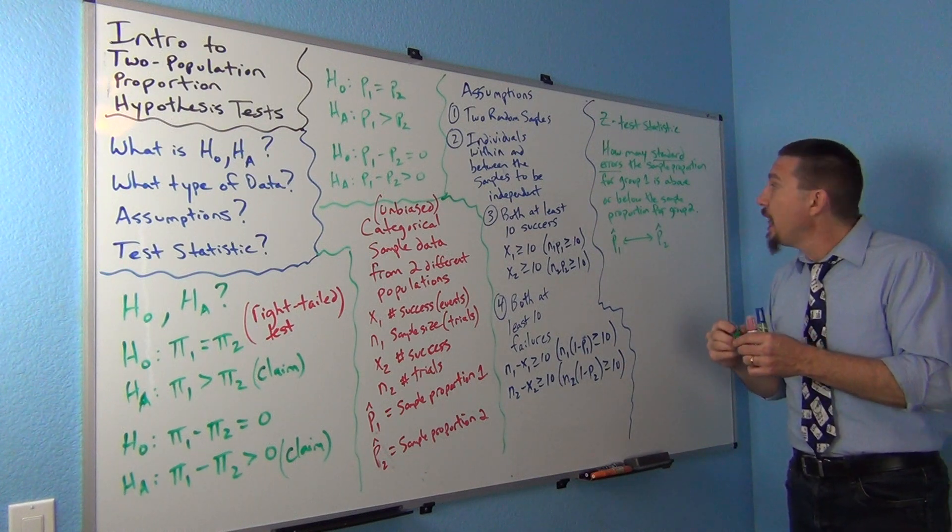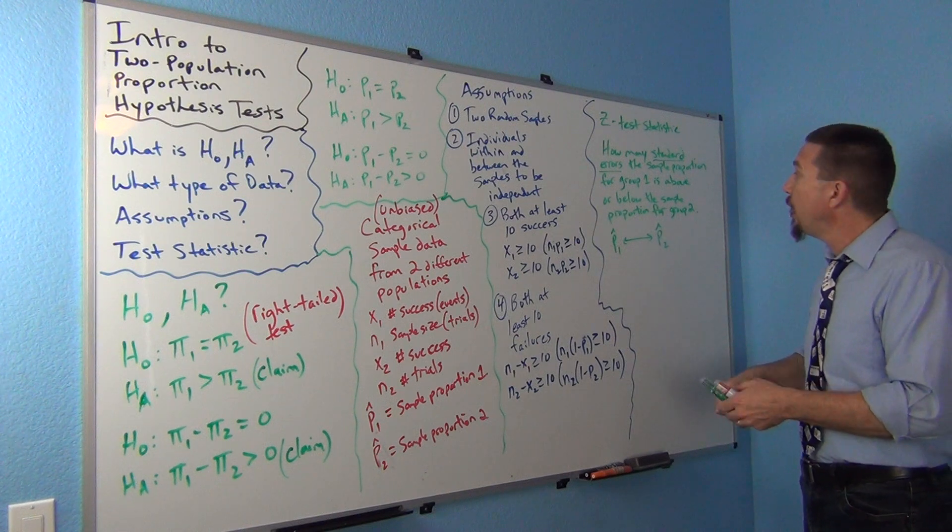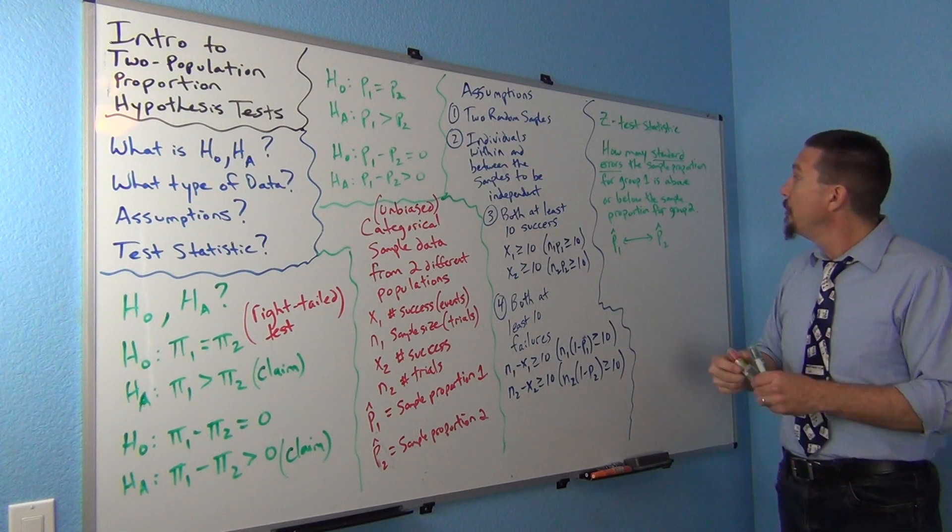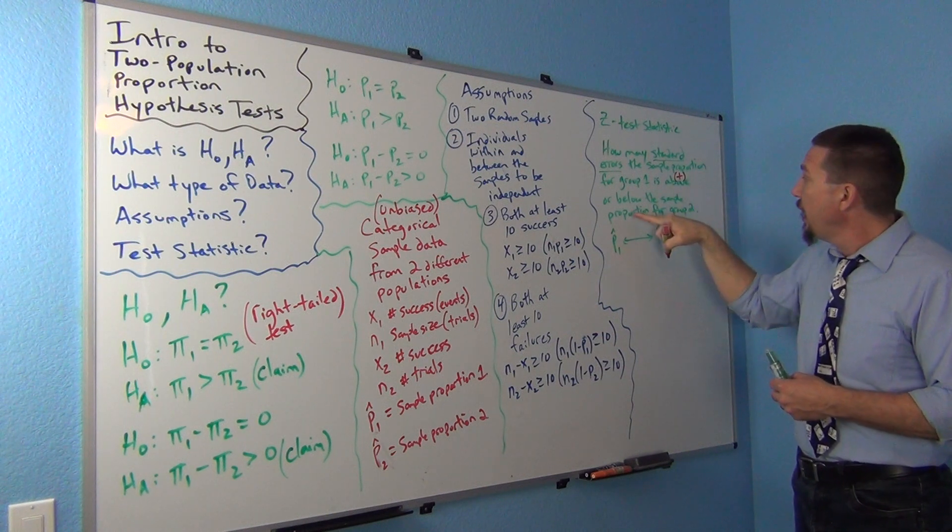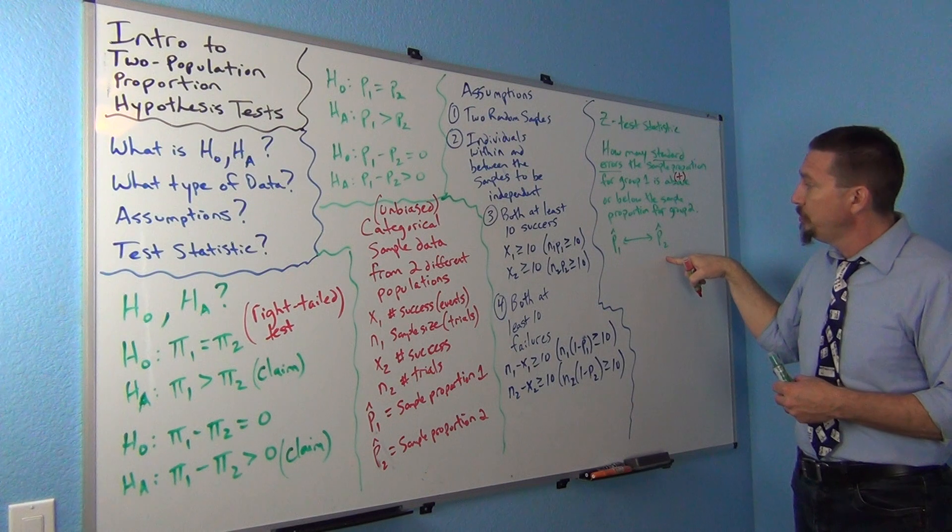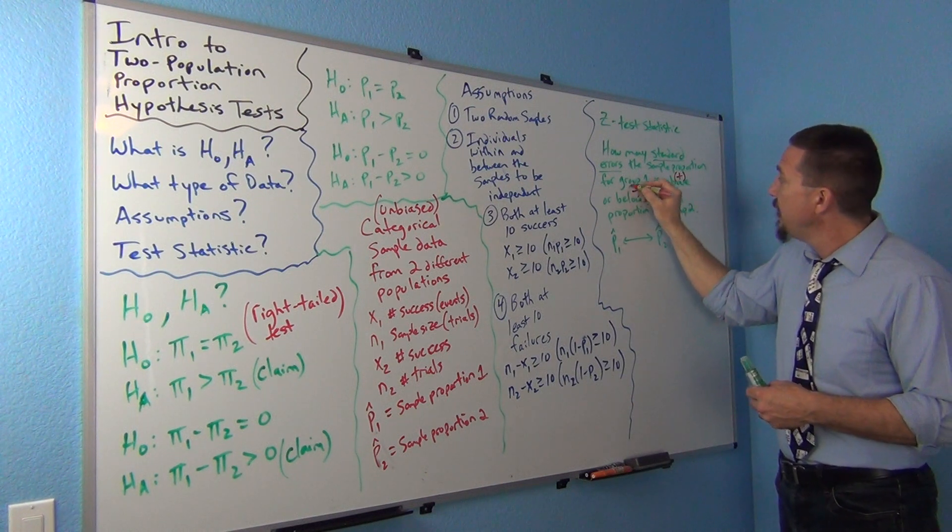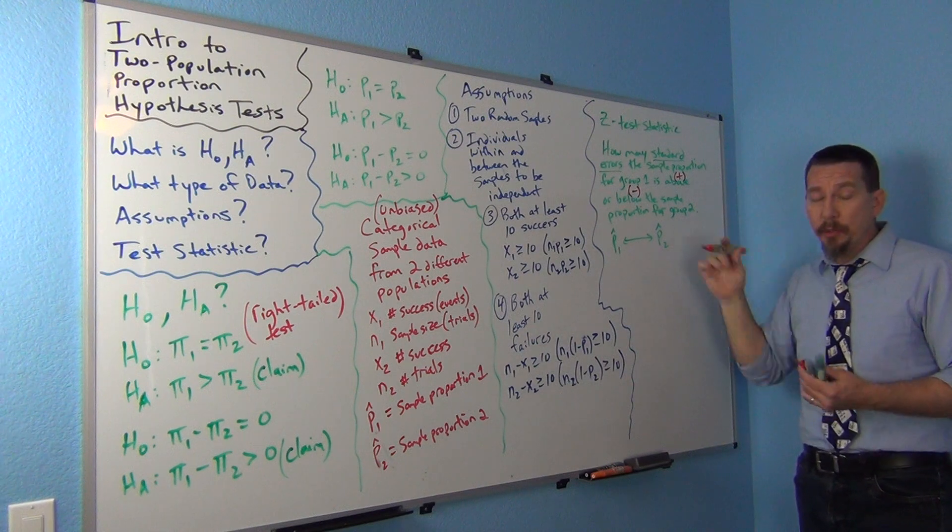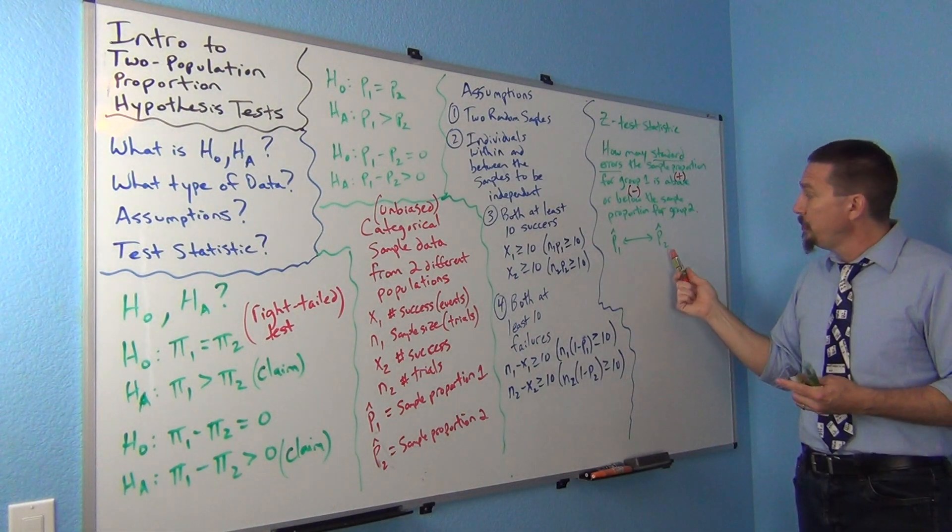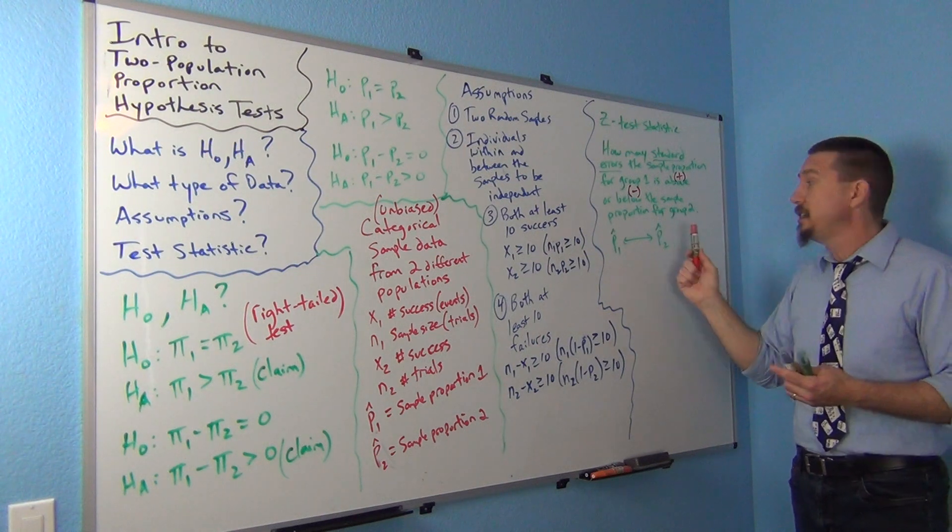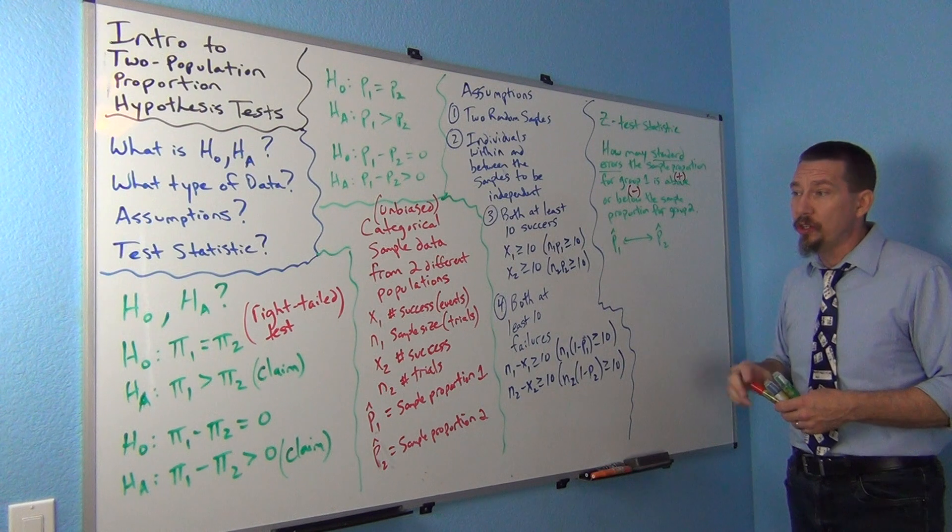Now, we learned before that when the Z test statistic comes out positive, that's telling you that group one is actually above. So, if our Z test statistic comes out positive, we know it's above, P1 is above P2, P1 hat is above P2 hat, and if it's below, it's negative. So, very similar to the one population sentence, except it's comparing P1 hat to P2 hat instead of P hat to pi, right? In the one population, we had just a number for the null hypothesis.